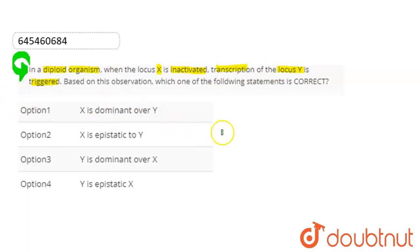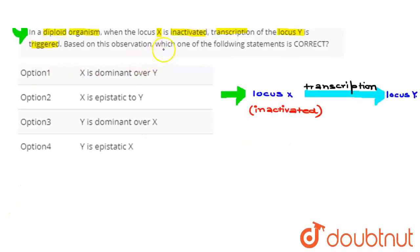Right, so here it is. This is a diploid organism. When locus X is inactivated, the transcription of locus Y is triggered. Based on this observation, we have to tell which given option is correct.